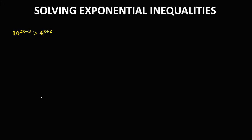Let's have this topic: solving exponential inequalities. We have a given exponential inequality. First, we need to rewrite it with the same base. Since the given bases are 16 and 4, we need to find the common base. We can rewrite 16 as 4 to the power of 2, so the common base is 4.